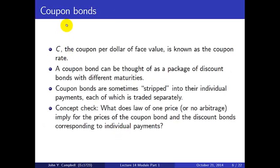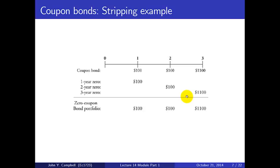For coupon bonds, the quantity C — the coupon per dollar of face value — is known as the coupon rate. A coupon bond can be thought of as a package of discount bonds with different maturities. In fact, these coupon bonds are sometimes stripped into individual payments, each of which is traded separately.